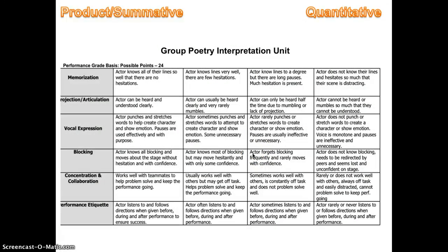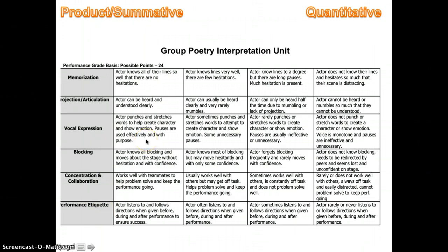The final summative rubric for this same unit was quantitative and included many of the areas from the formative assessments, plus a few others: projection and articulation aside from vocal expression, concentration and collaboration — working well on stage with teammates — and performance etiquette. Students were responsible not only for what they did on stage, but for being good audience members when off stage. These examples illustrate process and product, summative and formative, quantitative and qualitative assessments to give you ideas for assessing group work and collaboration in the classroom.